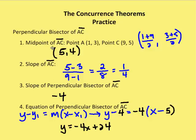Now we have a point — the midpoint (5, 4) — and a slope of -4 for the perpendicular bisector. We use the point-slope form: y - y1 = m(x - x1). Substituting in the values, we get y - 4 = -4(x - 5). Solving for y in slope-intercept form gives us y = -4x + 24.